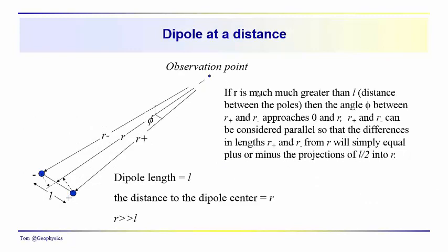For the situation where R is much greater than L, you can see the angle separating the distance to the negative pole, the distance to the center, and the distance to the positive pole. This angle phi between R-plus and R-minus approaches zero as R becomes fairly large, so we can ignore it and consider that these lines are, for the most part, practically parallel to each other.